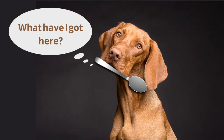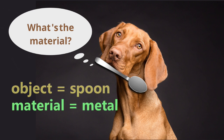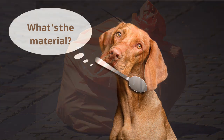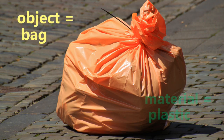What have I got here? It's a spoon. What's the material? It's made of metal. What object is this? It's a bag. What's it made of? It's plastic.